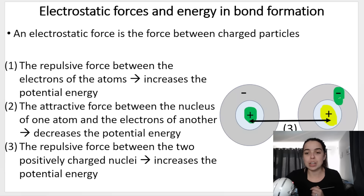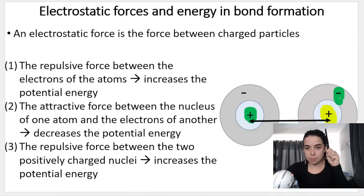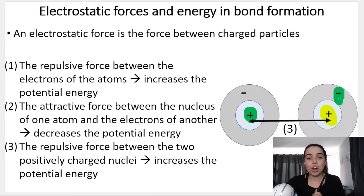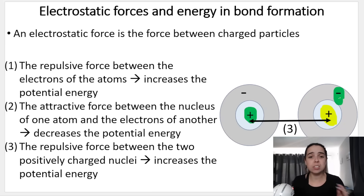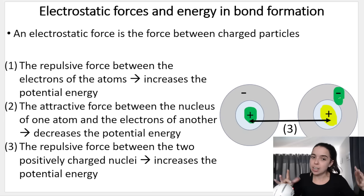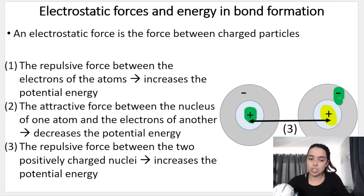Then number three represents the positive protons of one atom and the positive protons of the other atom. Like charges repel, so repulsive forces increase the potential energy again. There's this constant balance between attraction and repulsion, increasing the potential energy which is unstable, and decreasing the potential energy.